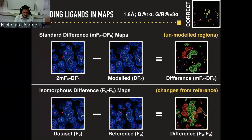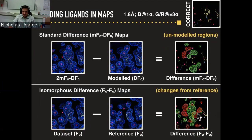The second technique is the FOFO map — a somewhat old-fashioned but effective method where instead of subtracting the model, you subtract the electron density of a reference data set from your ligand-bound data set. You can quite clearly see the difference features between data sets. It works nicely and is not affected by the model, but it still doesn't look like the ligand because it's just showing differences between data sets.